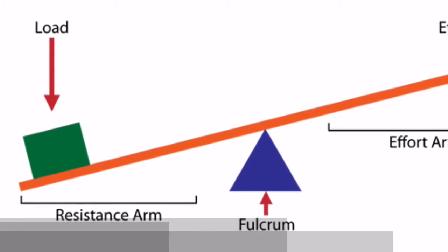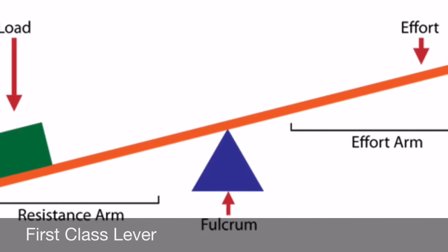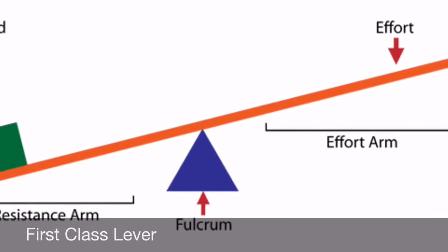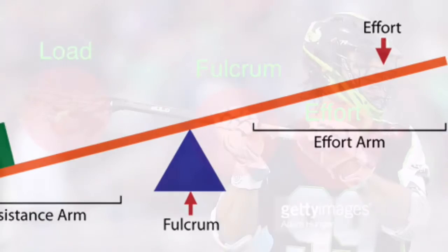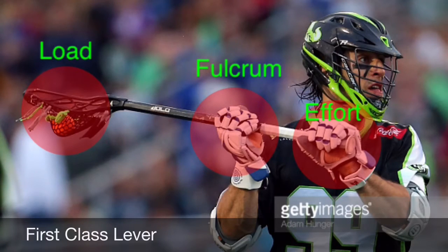A first-class lever has the load on one end, the fulcrum in the middle, and the effort on the other end. In the picture, you can see that shooting a lacrosse ball is a first-class lever. The bottom hand is the effort because that is the force used to move the lever. The top hand is the fulcrum because that is the point where the lever moves, and the ball is the load because that is the object that is moved.